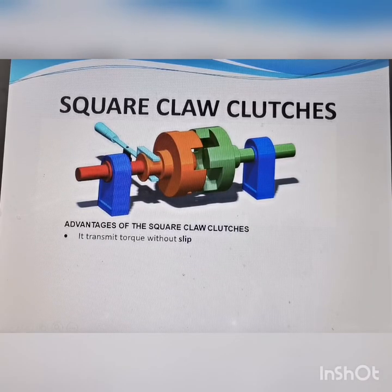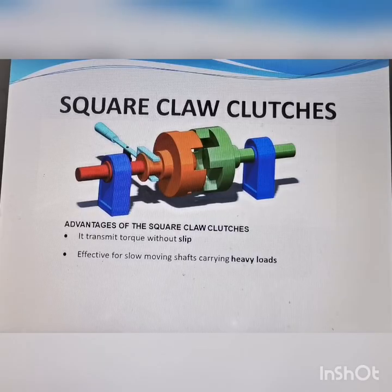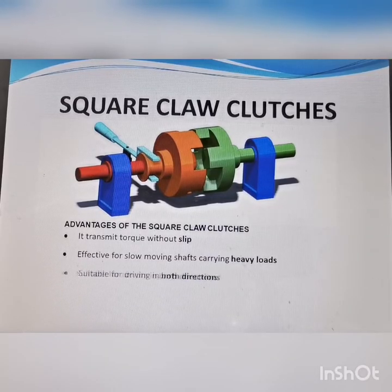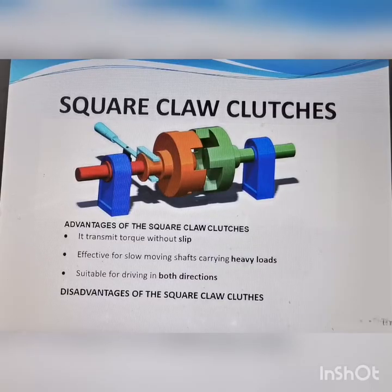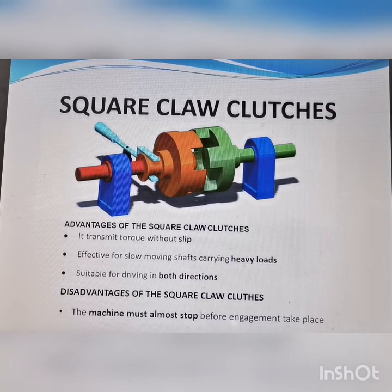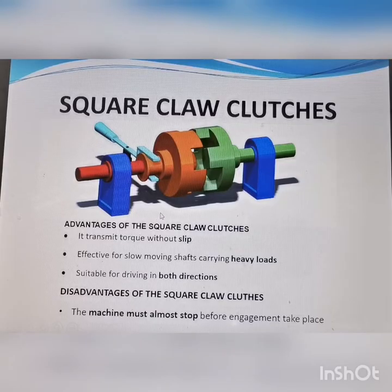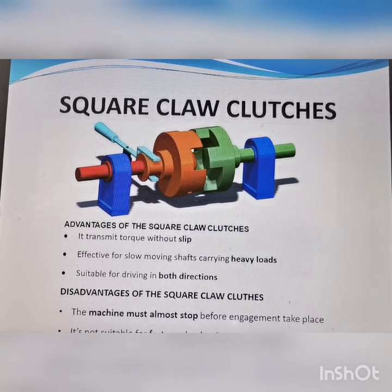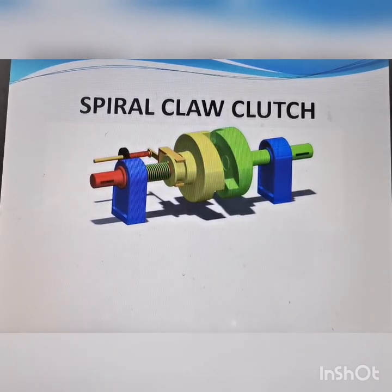The advantages of the square claw clutch are: it transmits torque without slippage, it is effective for slow-moving shafts carrying heavy loads, and it is suitable for driving in both directions. The disadvantage is that the machine must almost stop before engagement can take place — it cannot engage at high speed.